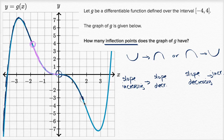Then right around here, the slope starts increasing again. It's negative but becoming less and less negative, then it becomes zero, then it becomes positive — more and more positive.